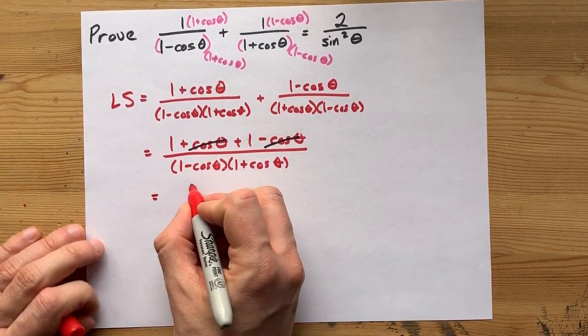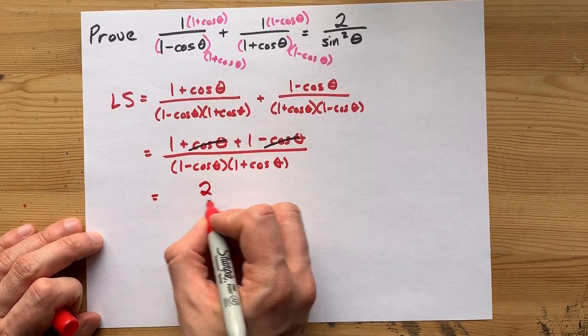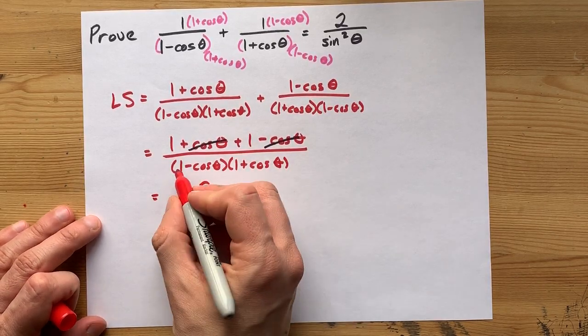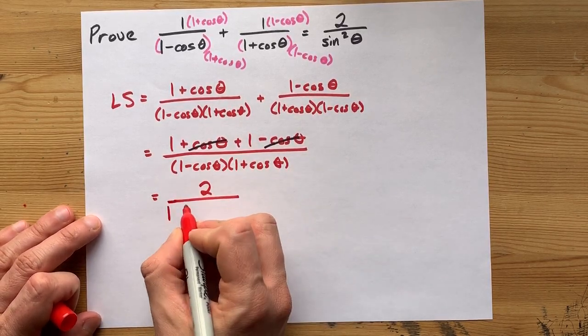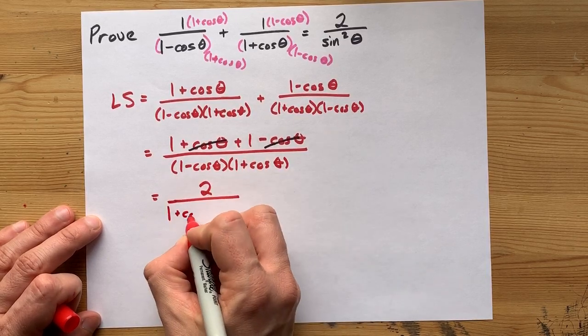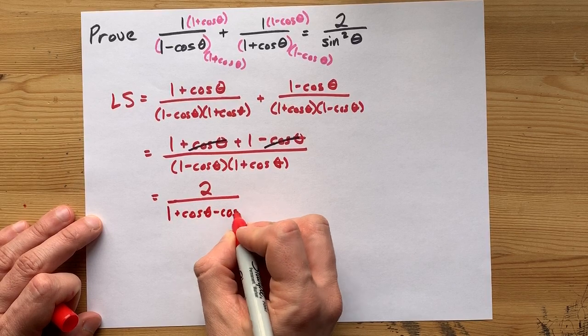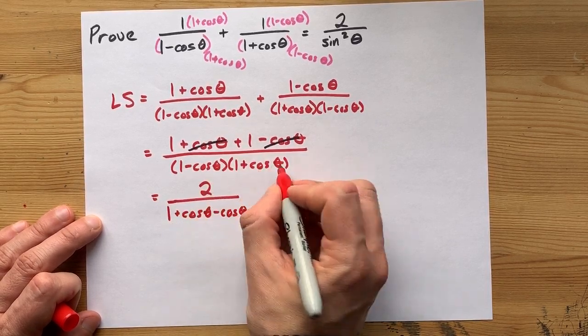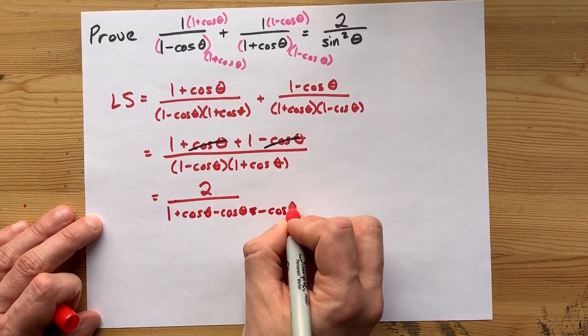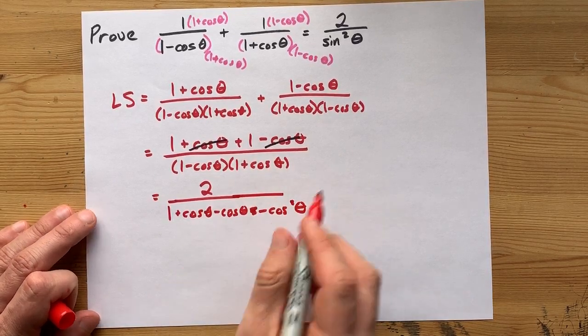The top here, like I said, 1 plus 1 becomes 2. And the bottom is 1 times 1 is 1. 1 times cos is cos. Negative cos times 1 is negative cos. And negative cos times cos is negative cos squared.